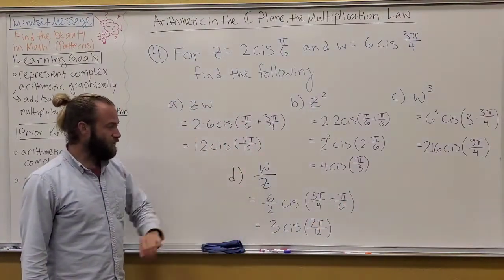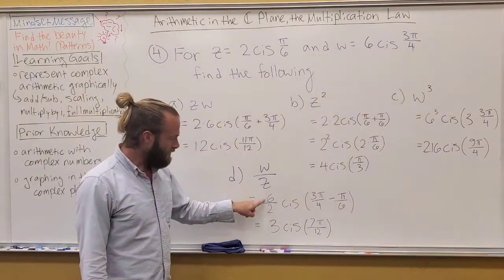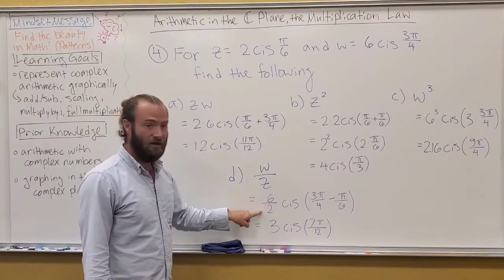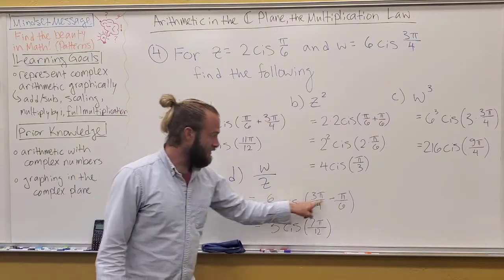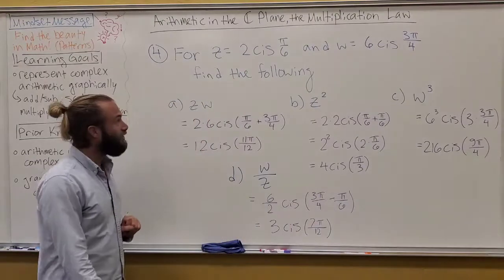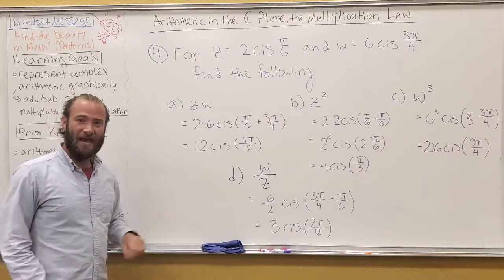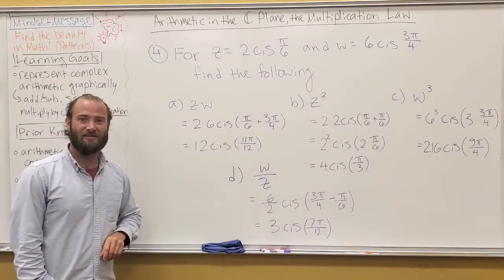And then as we mentioned with subtraction, and you'll explore this in one of your exercises, the quotient of the magnitudes in this case is 3, and then the difference in the angles is 7 pi twelfths. So, that's it for our lesson today. Happy math, and we will see you guys next time.